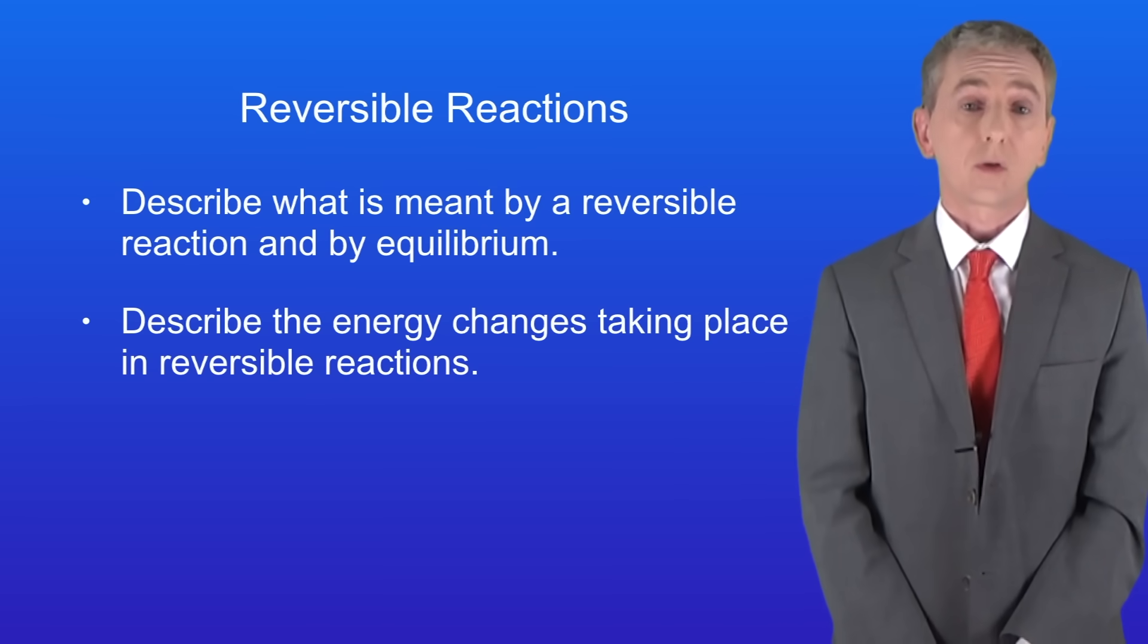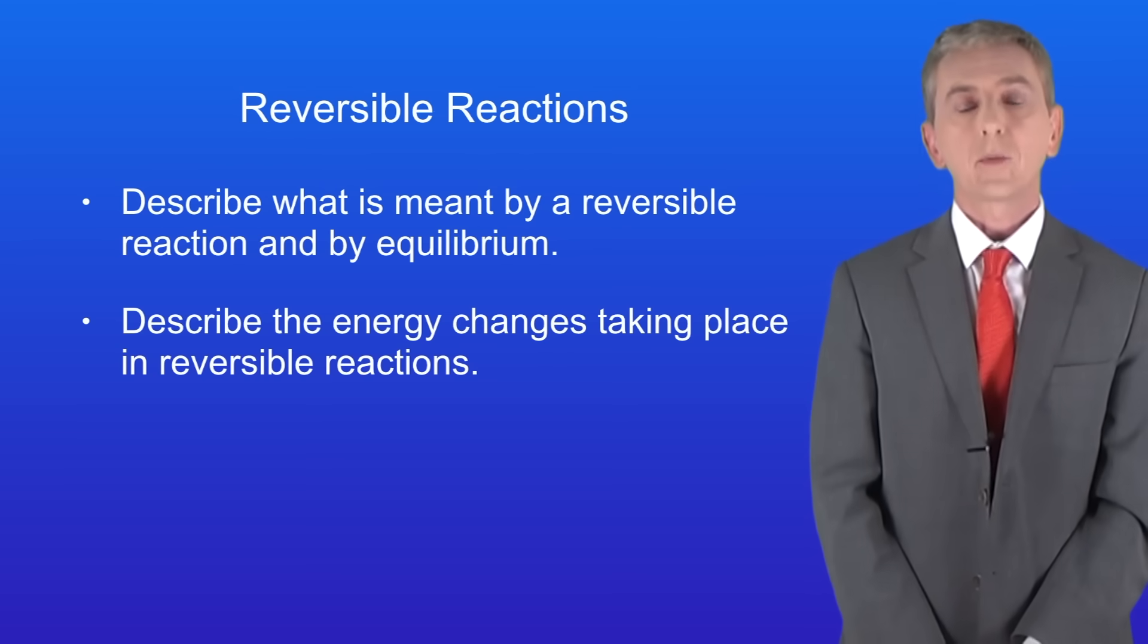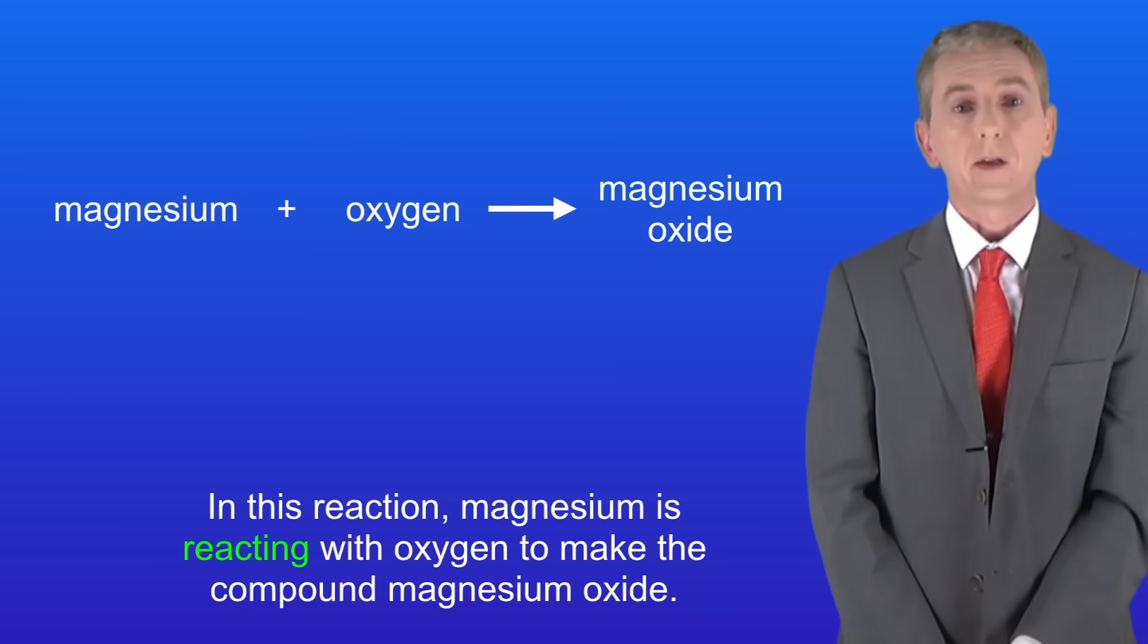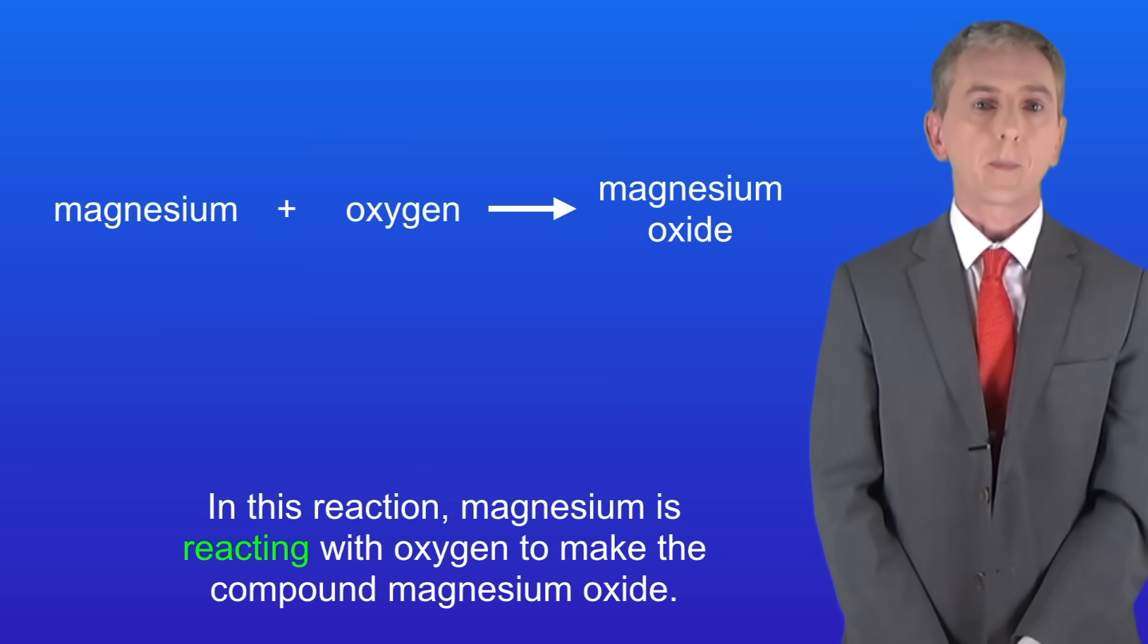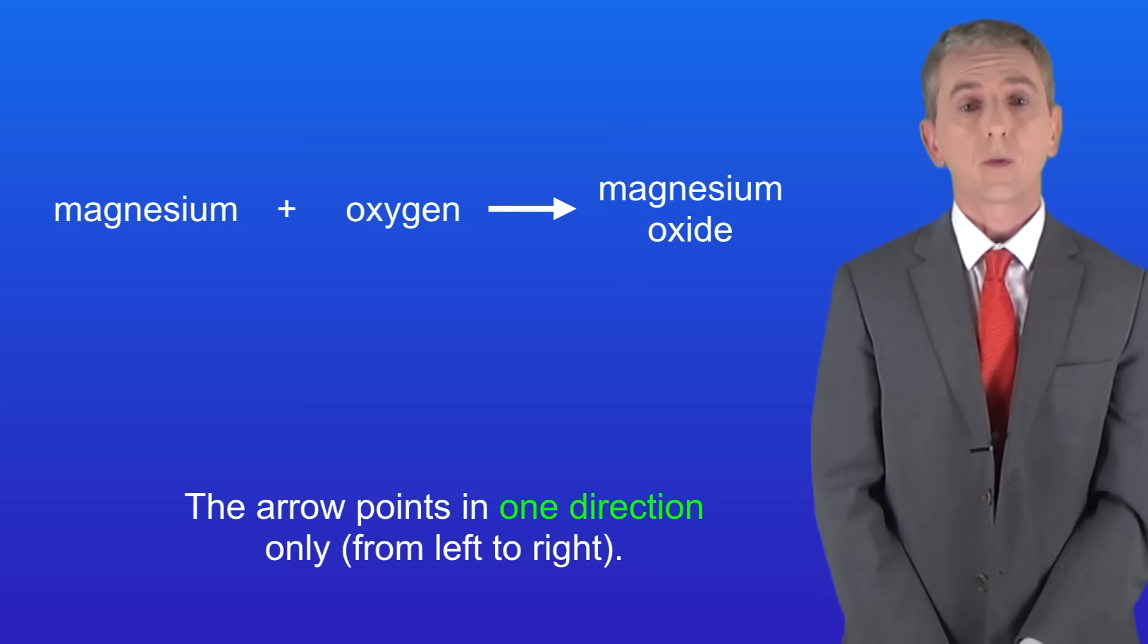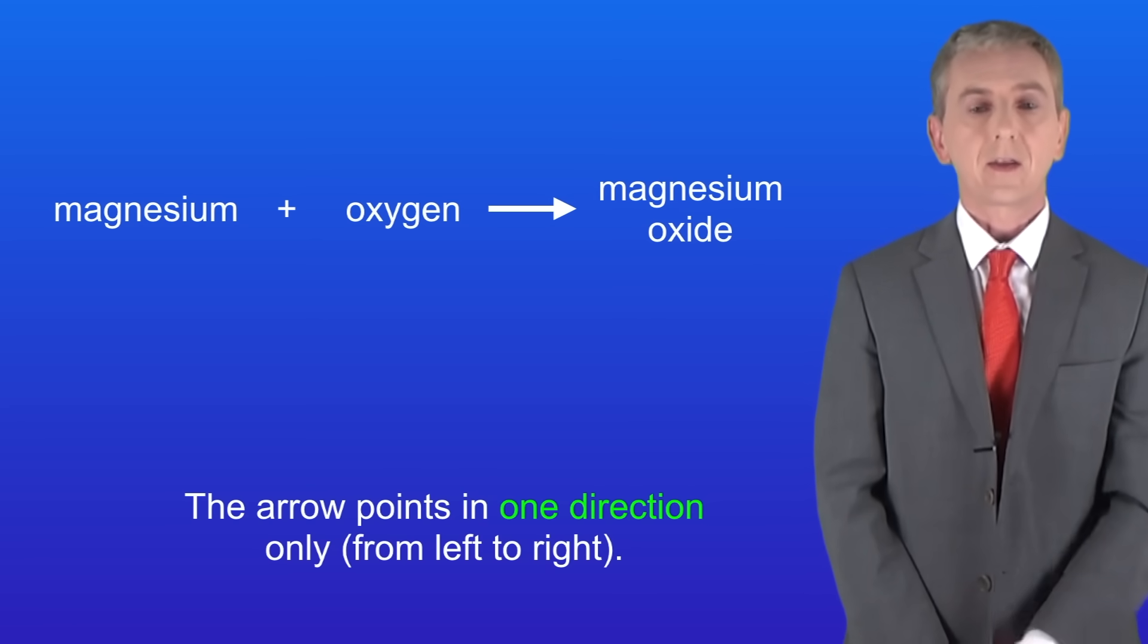Now we've seen a lot of reactions so far in GCSE chemistry. I'm showing you an example here. In this reaction magnesium is reacting with oxygen to make the compound magnesium oxide. Now you'll notice that the arrow points in one direction only, in other words from left to right, and we can see that here.